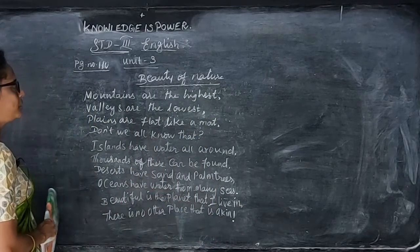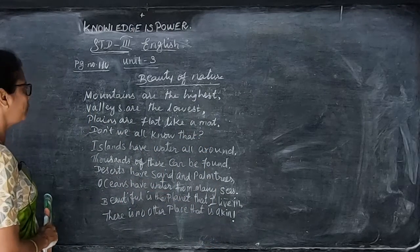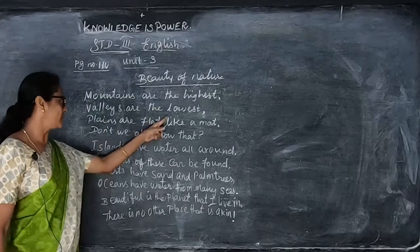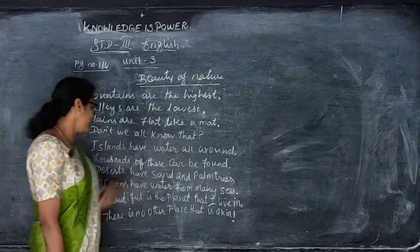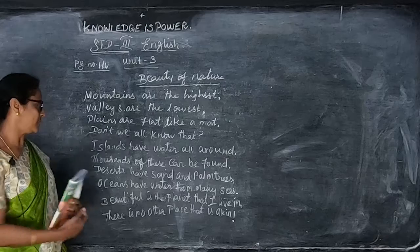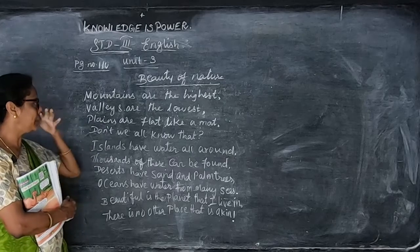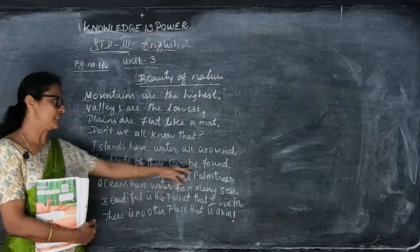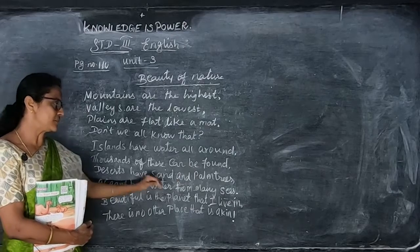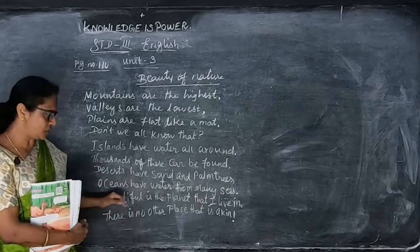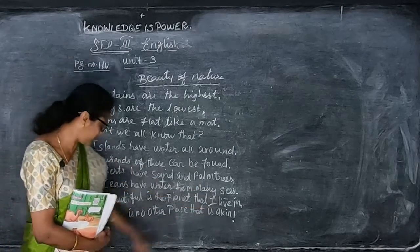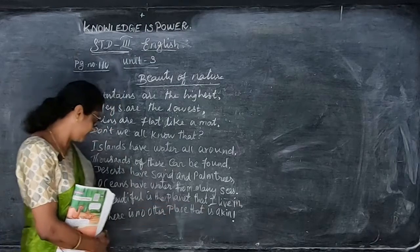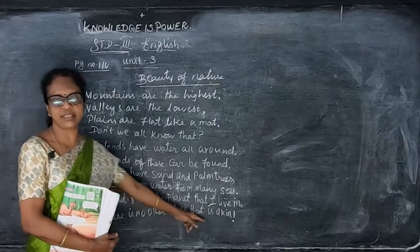This is the poem you have to memorize — 'Beauty of Nature.' Mountains are the highest. Valleys are the lowest. Planes are flat like a mat. Don't we all know that. Islands have water all around. Thousands of these can be found. Deserts have sand and trees. Oceans have water from many seas. Beautiful is the place that I live in. There is no other place that is akin.